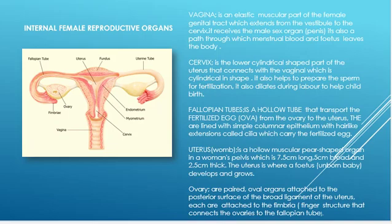The cervix is directly below the uterus. It is a cylindrical-shaped part of the uterus that connects with the vagina. It plays a part in preparing the sperm for fertilization and also plays a vital role in childbirth, as its dilation during labor aids delivery. The cervix contains columnar mucus cells, which produce mucus for lubrication.